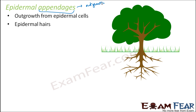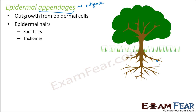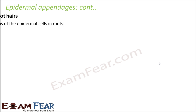These are also known as epidermal hairs — small hair-like structures coming out from the epidermal cells. They are seen in different parts of the plant. For example, in roots they are called root hairs. They are also termed as trichomes, which are generally seen in stems. So when we talk about epidermal appendages, we will talk about these two things: root hairs and trichomes.